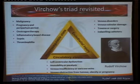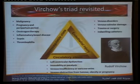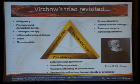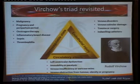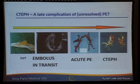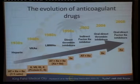The Virchow's triad, described since 1850, is still applicable and we continue to discover more about it. The revisited triad includes hypercoagulable state, stasis, and endothelial injury. Arterial thrombosis is usually more attributed to endothelial injury, while venous thrombosis is more related to hypercoagulable state and stasis. This disease has not only acute consequences like PE or fatal events, but also long-term consequences: post-thrombotic syndrome and chronic thromboembolic pulmonary hypertension.